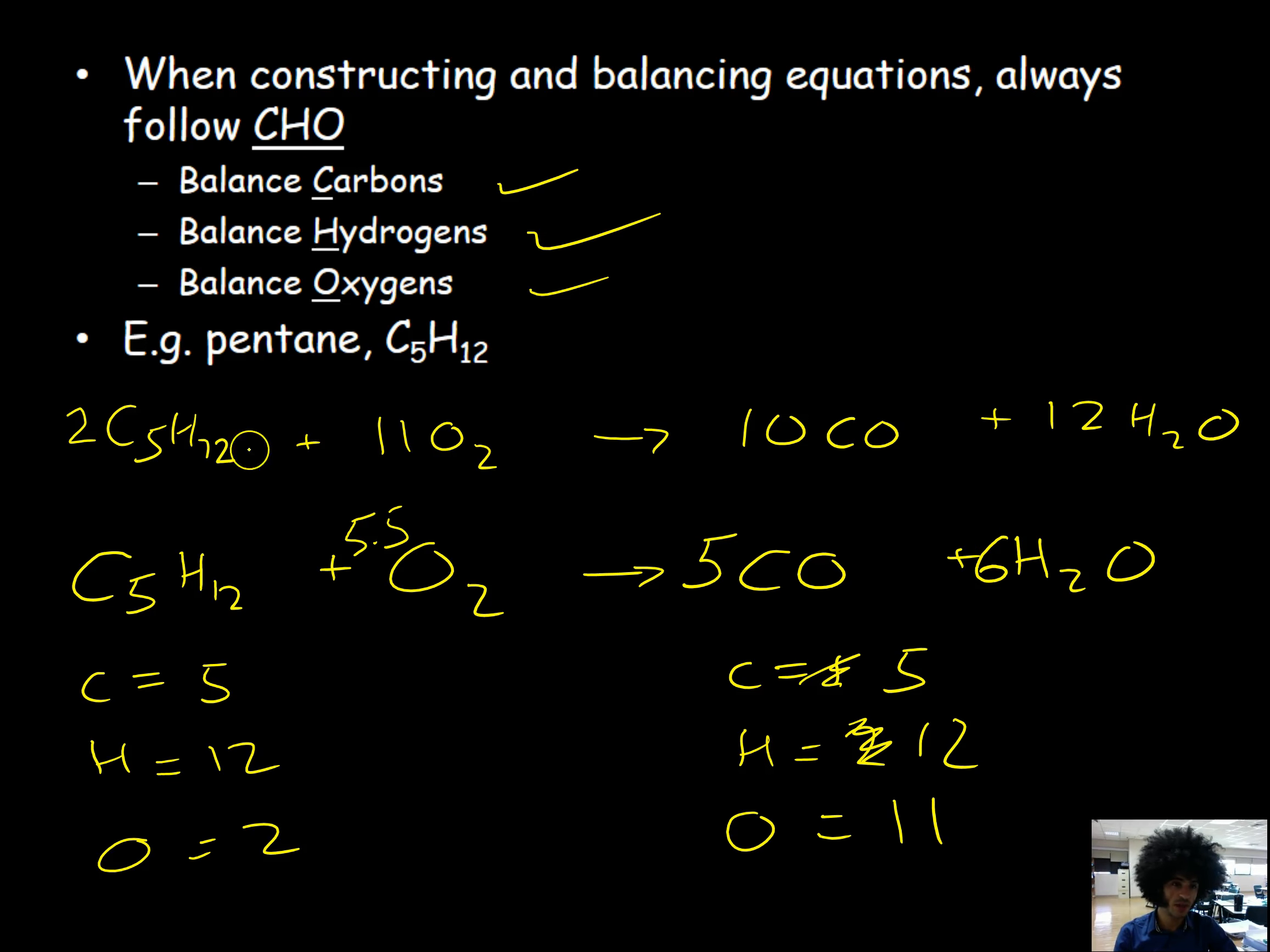Again I can double check the numbers just to make sure I haven't made a mistake. Two lots of 5 equals 10 carbon. 10 carbon over here. That works. Hydrogen: two lots of 12 is 24. Two lots of 12 is 24. That works. And oxygen I've got 11 lots of 2 which is 22. And I've got 10 plus 12 here which is also 22. So that works as well. So it's balanced and I'm happy with that. So I hope this video has been helpful. And good luck with the rest of the balancing of your equations.